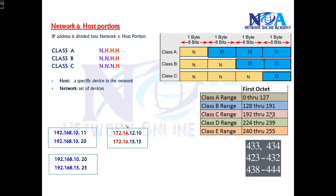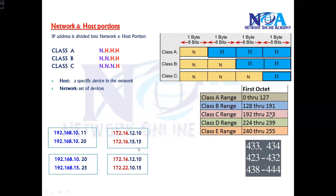Taking a Class B example: 172 falls in the range of Class B (128–191). In Class B, there are two network portions and two host portions. If the first two portions are the same, the devices are in the same network. In another Class B example with 172.16, if the two network portions are not the same, then those devices are not in the same network.